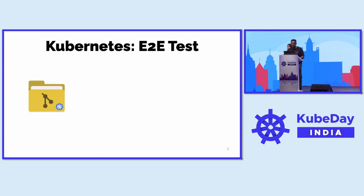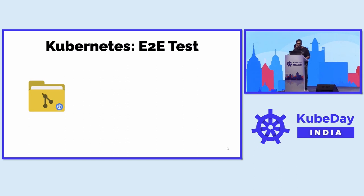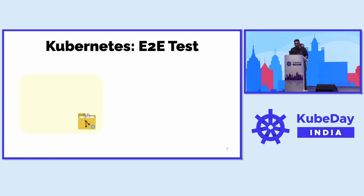Kubernetes end-to-end testing: we have all our source, the Kubernetes source, in GitHub repos. Folks want to improve it, add features, find bugs, and so they submit their own code to the project in the form of pull requests. And we need to check for brokenness — we need to check if the code's all right.